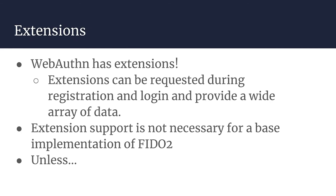WebAuthn has extensions — this is super exciting, like a dress with pockets. Coming from U2F, which had a pretty finite space for growth, extensions can be requested during registration and login. They can be specific to either registration or login, and can be specific to the client or authenticator. You can ask the authenticator things like its geo-IP, how many times it's been used, or what its false positive ratio is. Extensions allow for additional security posture and give you additional information about the client or authenticator — the space is still being developed.